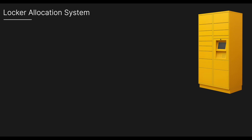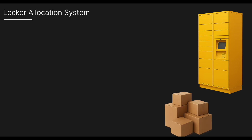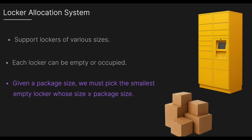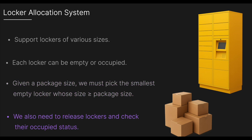In this video we're going to be looking at a common low-level design coding question: design a locker allocation system. We need to support lockers of various sizes. Each locker can be empty or occupied, and given a package size we must pick the smallest empty locker whose size is greater than or equal to the package size. The core of the solution is making our algorithm to find the next locker size as efficient as possible. We also need to be able to release lockers and check their occupied status.